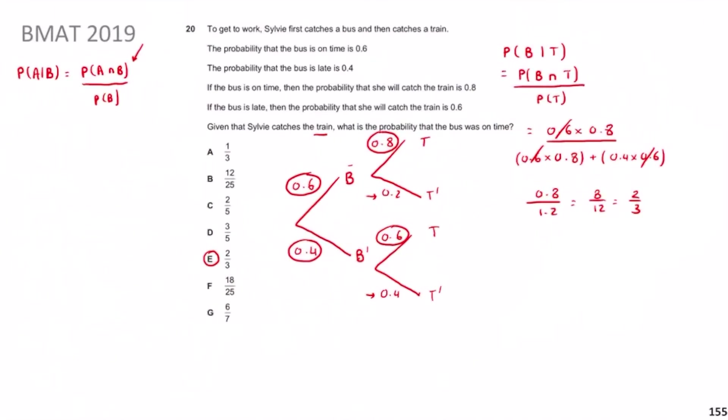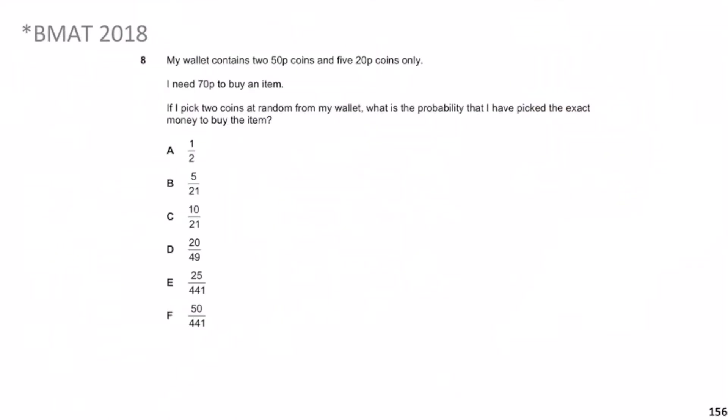Welcome back. We previously looked at BMAT 2019 Question 20, introducing how tree diagrams work and the important formula P(A|B). Now we move on to BMAT 2018, which is a starred question.